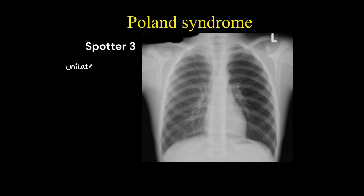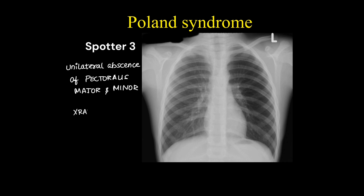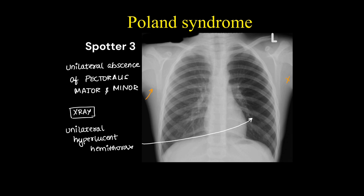This is a case of unilateral hyperlucent lung. It is Poland syndrome, where there is unilateral absence of the pectoralis major and minor muscles. This is a differential for unilateral hyperlucent hemithorax, as seen here.